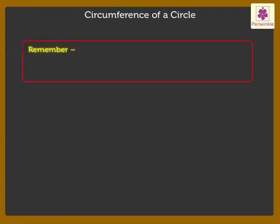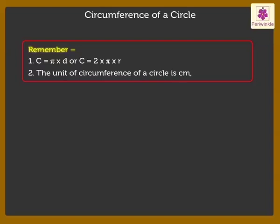Remember, 1. Circumference is equal to pi into diameter or circumference is equal to 2 into pi into r. 2. The unit of circumference of a circle is centimeter, meter or kilometer.